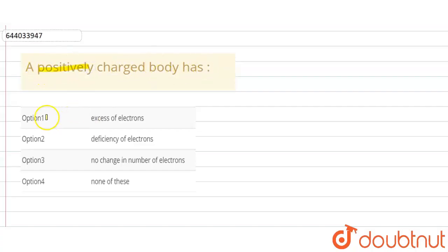Here we have given four options. Option 1 is excess of electrons. Option 2 is deficiency of electrons. Option 3 is no change in number of electrons, and option 4 is none of these.